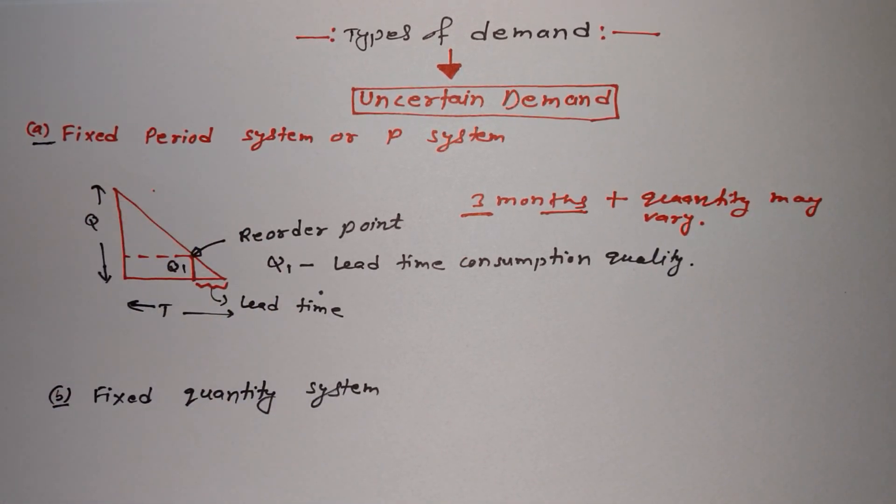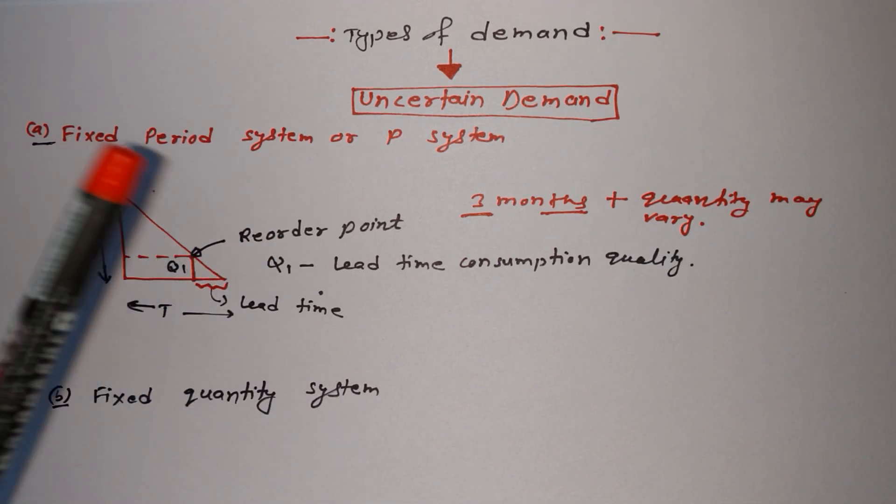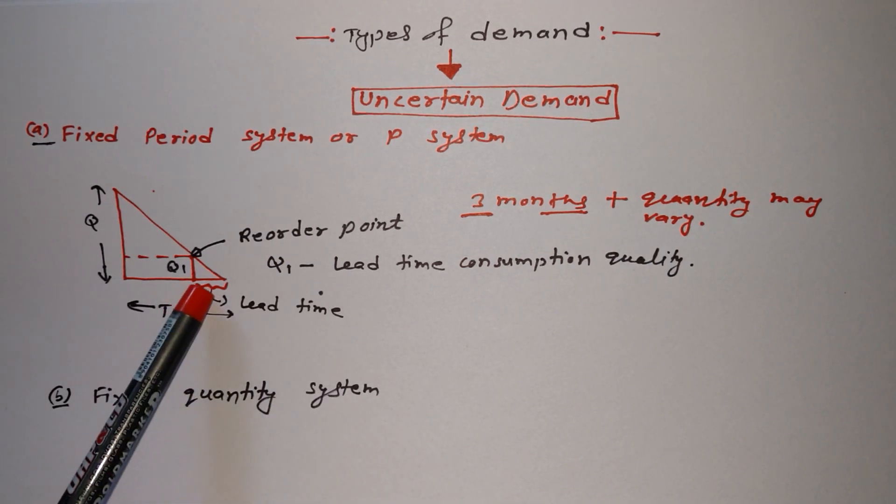If you see this diagram, this is important. Here, Q is quantity and T is time, and from here to here is known as lead time. Basically, lead time is the time period after which the order reaches.